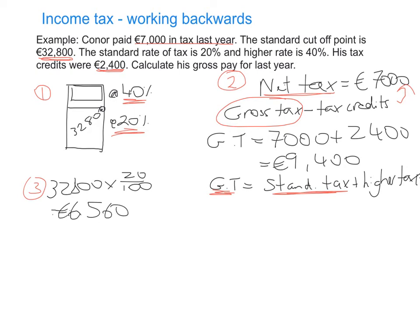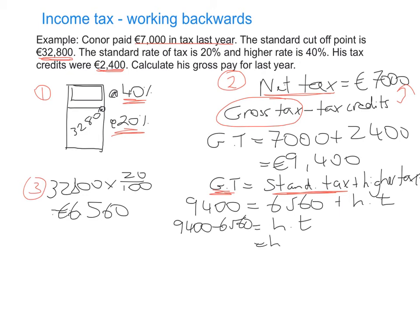Taking that back to the equation, we know €9,400 equals €6,560 plus the higher tax rate. To find the higher tax, I want it by itself, so I subtract €6,560 from both sides. Therefore, higher tax equals €9,400 minus €6,560, which gives us €2,840. So the higher rate tax paid on the portion of gross income above the cut-off point is €2,840.